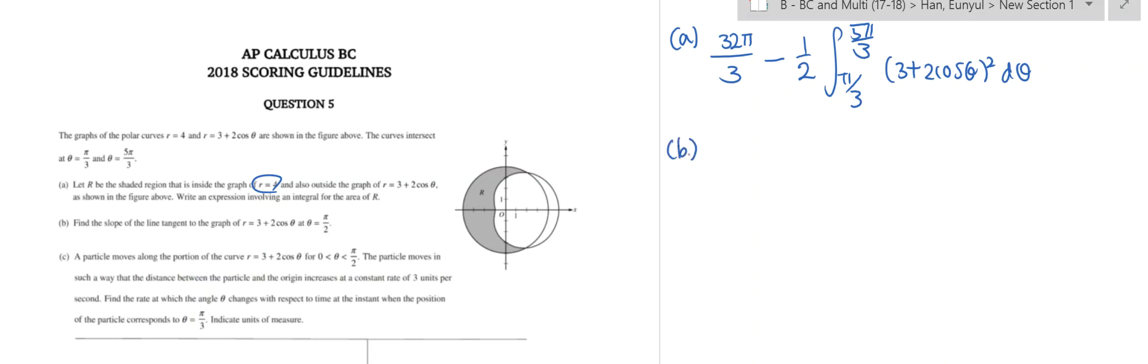For Part B, find the slope of the line tangent to the graph of r equals 3 plus 2 cosine theta. So we have to get dy/dx, which is the slope, and we know that this equals dy/d theta over dx/d theta. This is all evaluated at theta equals pi over 2, which equals negative 2 over negative 3, which eventually ends up as 2 thirds.